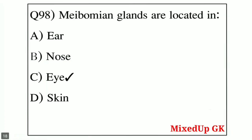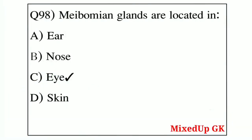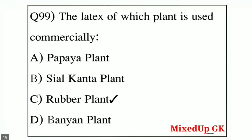Question number 98: melanin and blends are located in — Option A: ear, Option B: nose, Option C: eye, Option D: skin. The correct answer is Option C — eye.